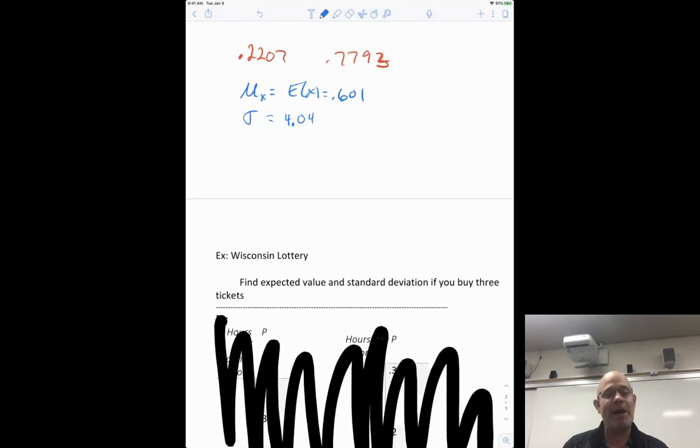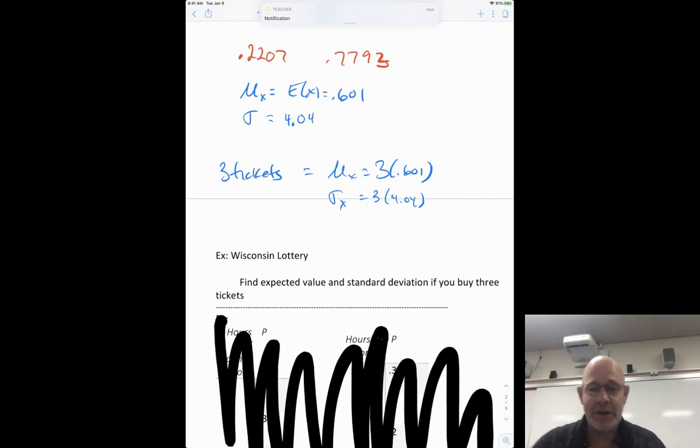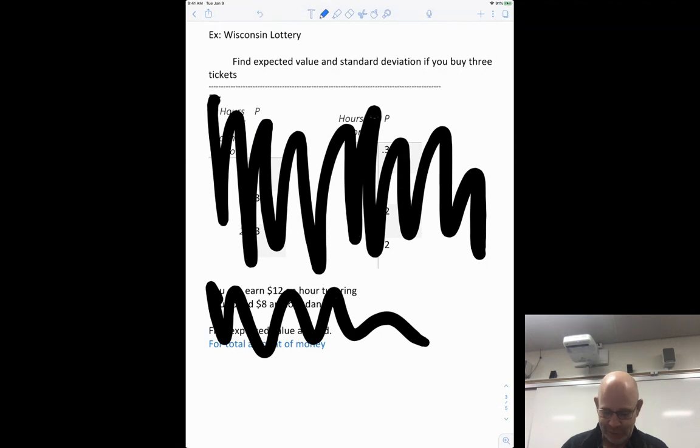So now the next question that comes is, how do we combine these? Find the expected value and the standard deviation if you buy three tickets. You may remember recentering and rescaling, which we're going to review here in just a second. But if you buy three tickets, the mean is just three times the 0.601 and the standard deviation. Remember, you're just multiplying everything by three, in essence, because there's three different ones. So the standard deviation gets multiplied by three also.